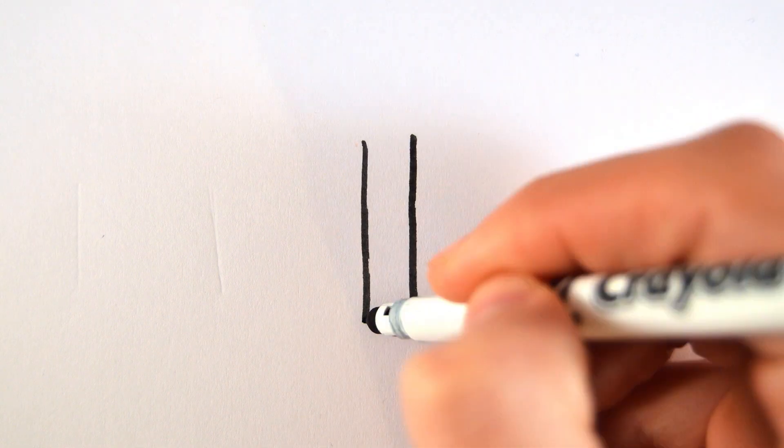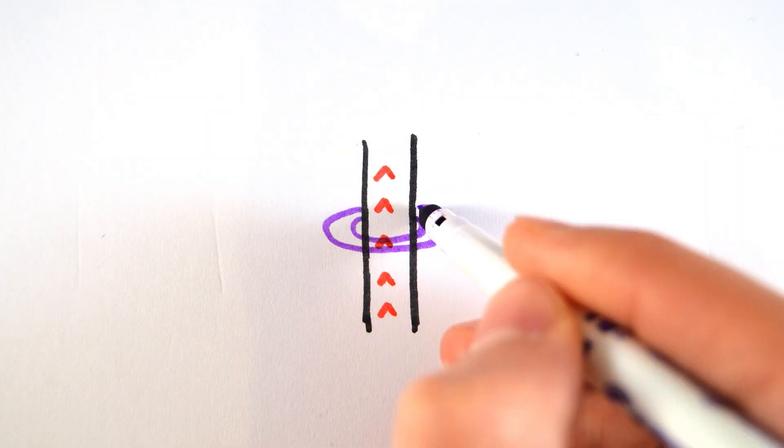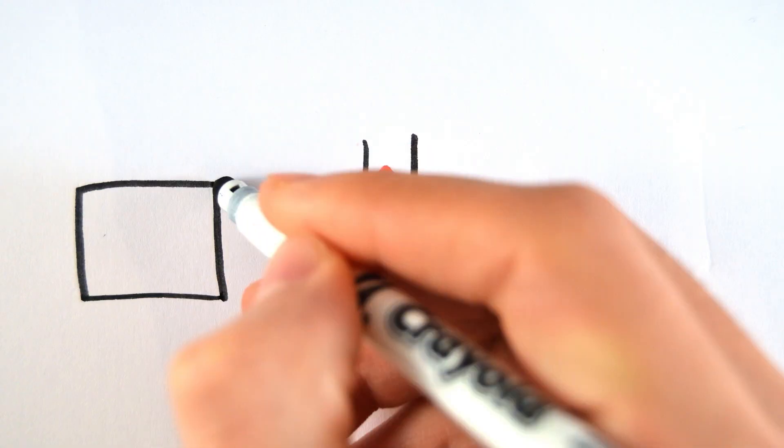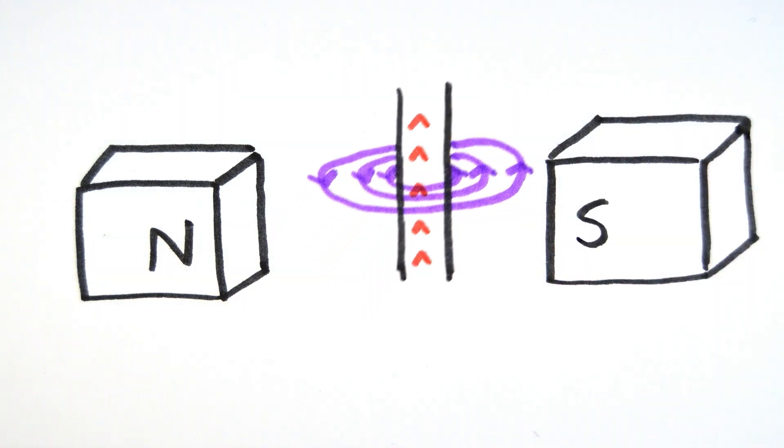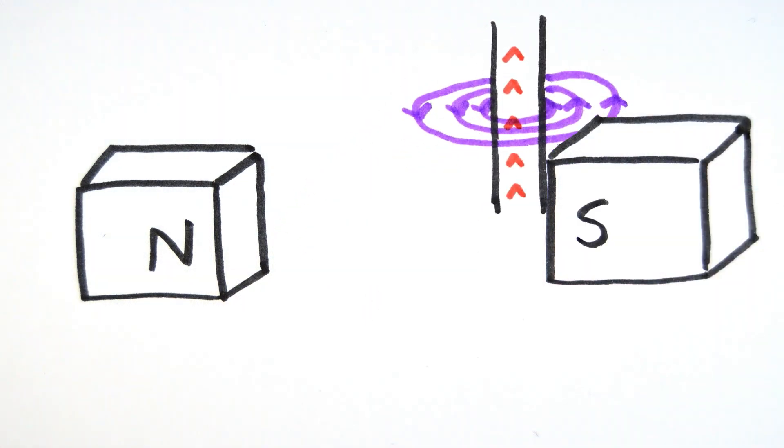When a current passes through a wire, it produces a magnetic field. If you put this magnetic field in another magnetic field, it puts a force on the wire. This is known as the motor effect.